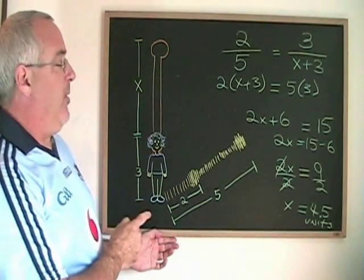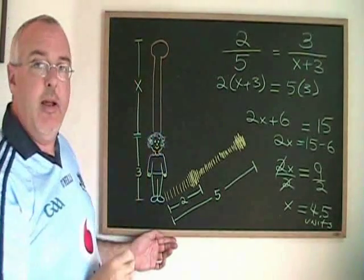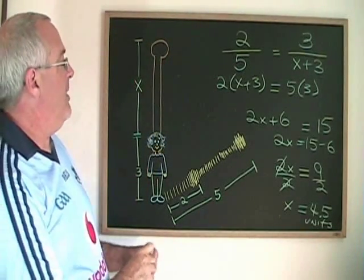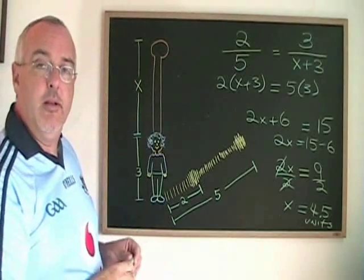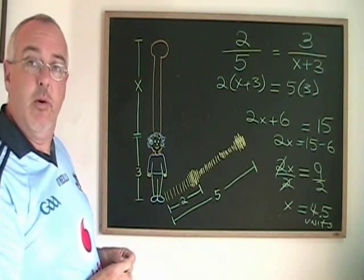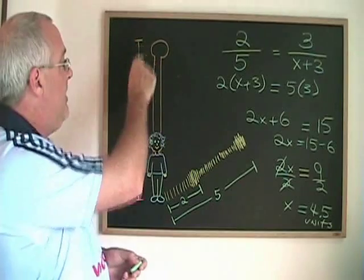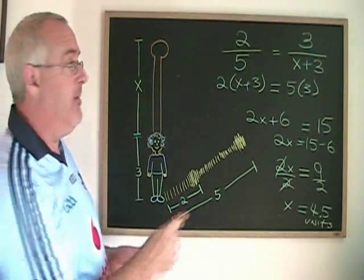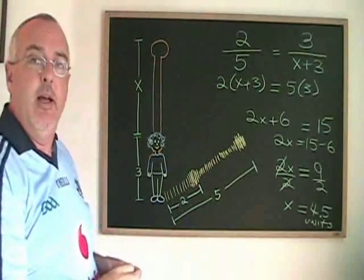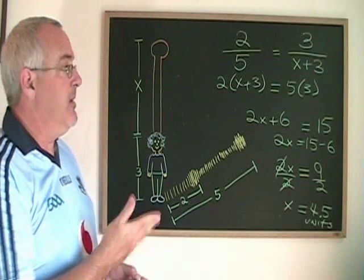The flagpole is 4.5 units taller than Emma. Even though the x we're looking for is not the side of one of the triangles we're dealing with, we can take the x and three and we can combine them into this algebraic expression and solve our problem anyway using a direct proportion.